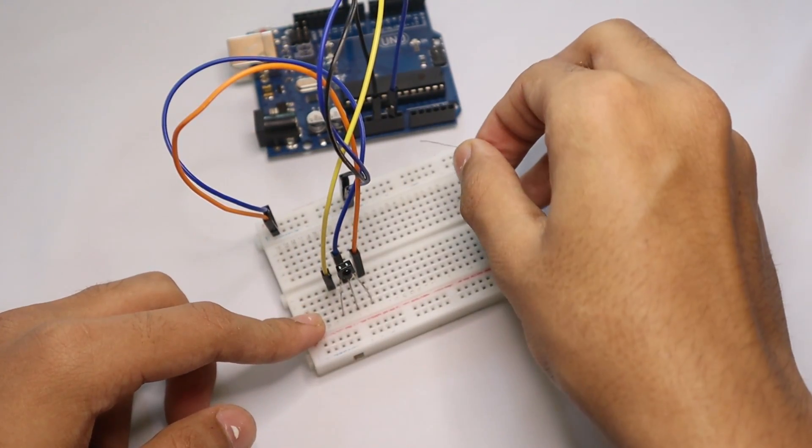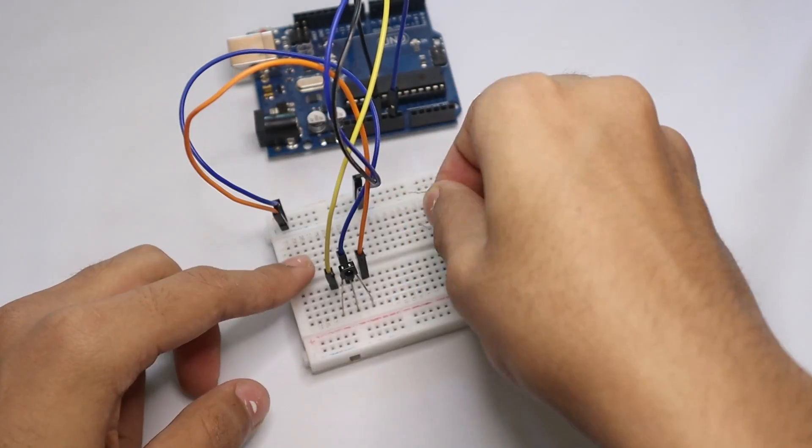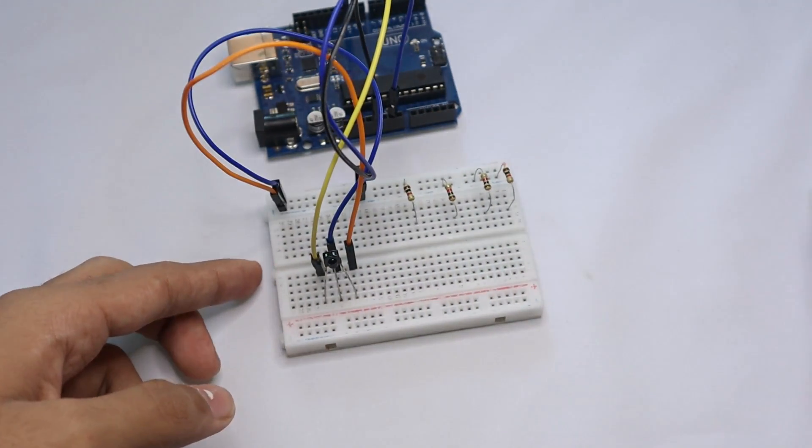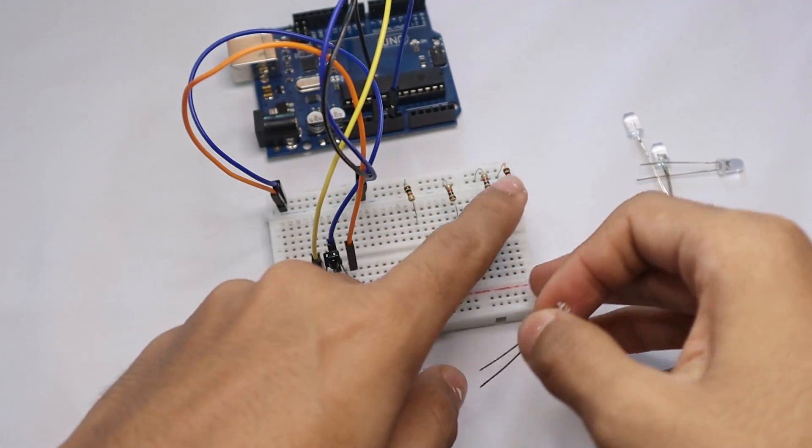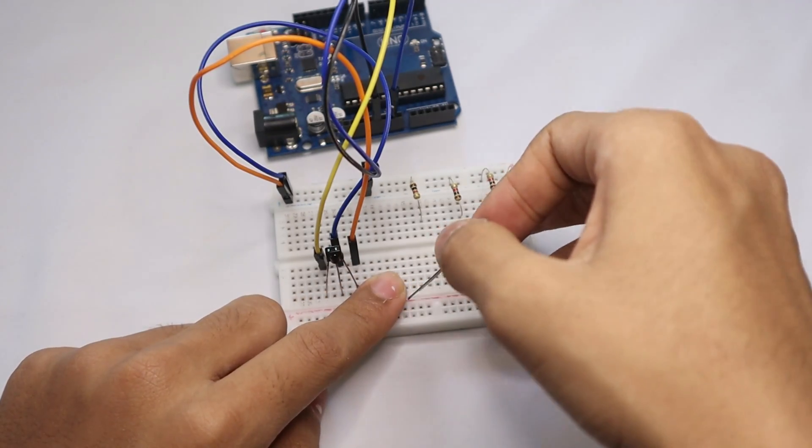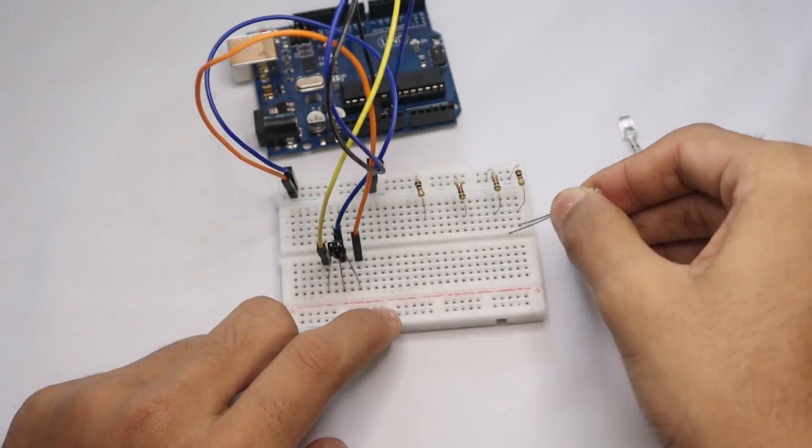Now after you have done that, next step is to connect the LEDs. Now connect the positive terminal in between the resistors and the negative right in front of the resistor.